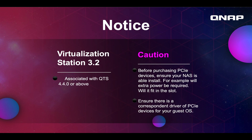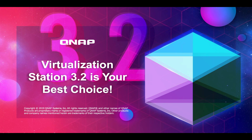One notice: Virtualization Station 3.2 requires QTS 4.4 or above. Also, a caution before purchasing a PCIe card — ensure that the PCIe device can be installed in your NAS. For example, will the card require extra power beyond what your PCIe slot can deliver? Will the card physically fit inside your NAS? And ensure that there is a driver for the card in your VM. I hope you've enjoyed watching. Our new upgrades to Virtualization Station 3.2 make QNAP an excellent place to run your VMs, not only because of improved features, but also because you don't have to pay any licensing fees and can save the cost of buying a VMware server. Thank you.